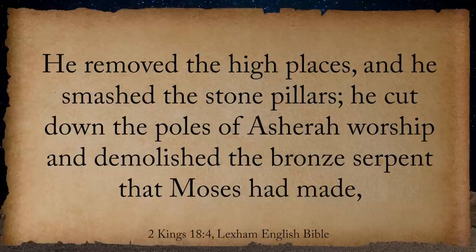He removed the high places, and he smashed the stone pillars, and he cut down the poles of Asherah worship and demolished the bronze serpent that Moses had made. For up to these days, the Israelites were offering incense to it and called it Nehushtan. Each of these items represent the worship of different gods in Canaan and surrounding regions.